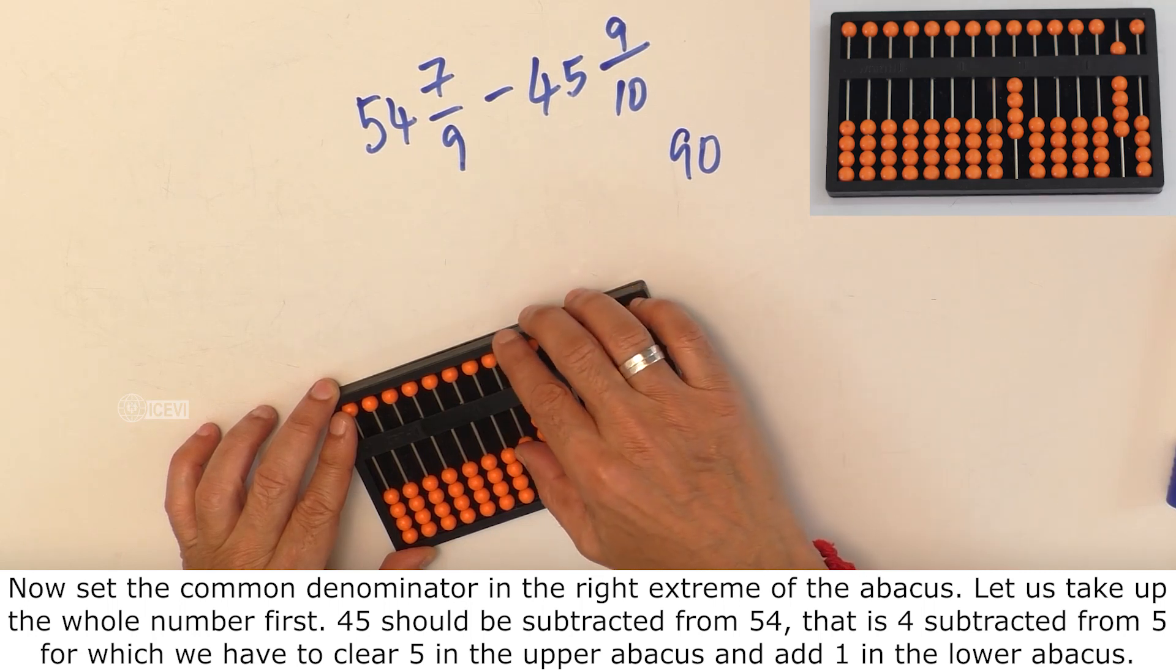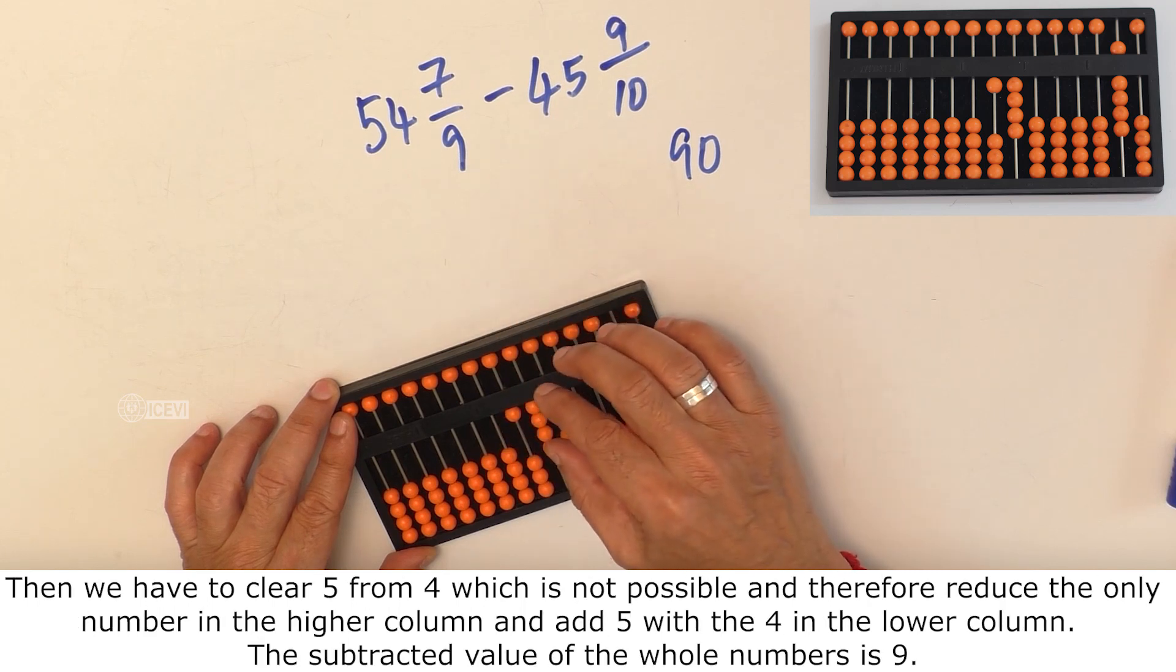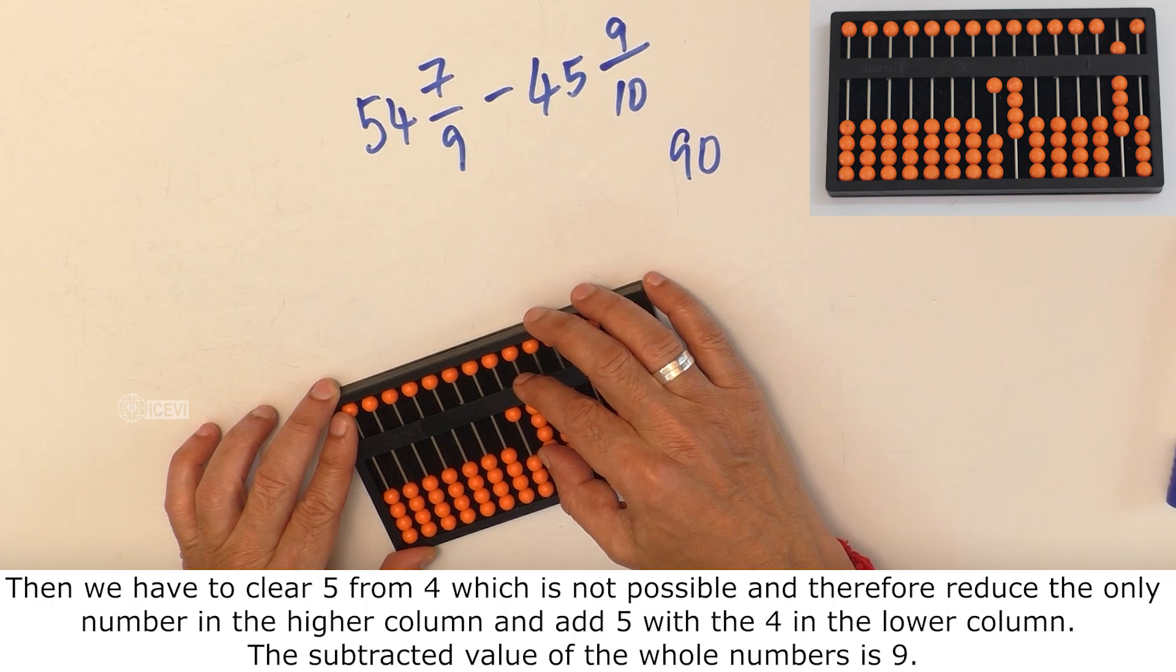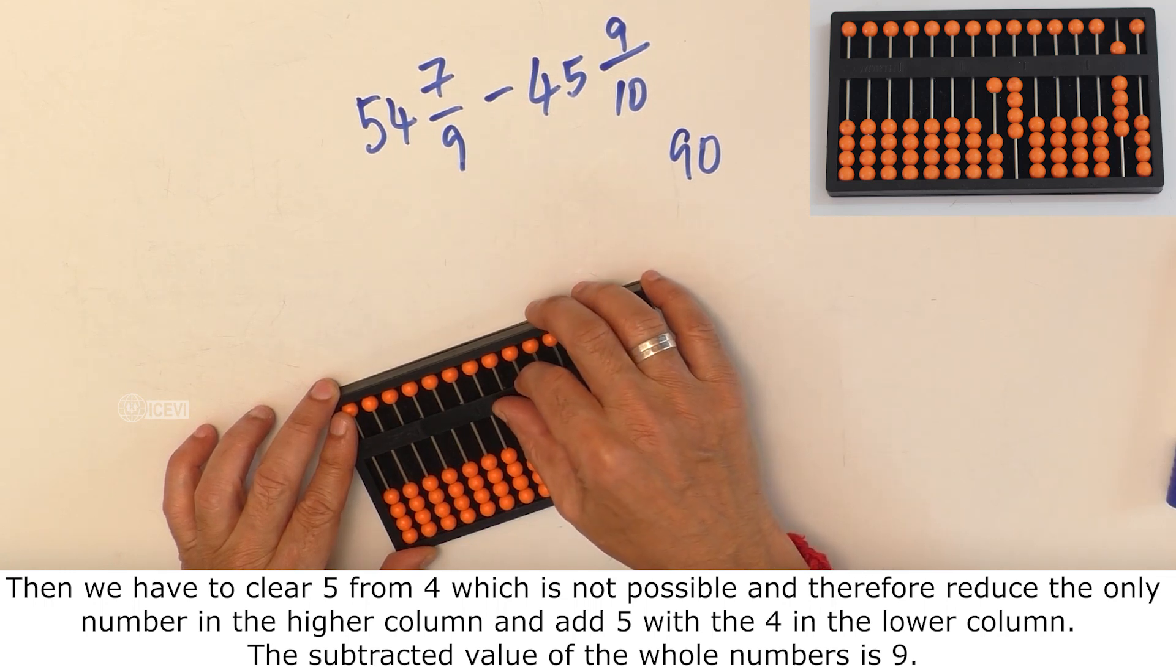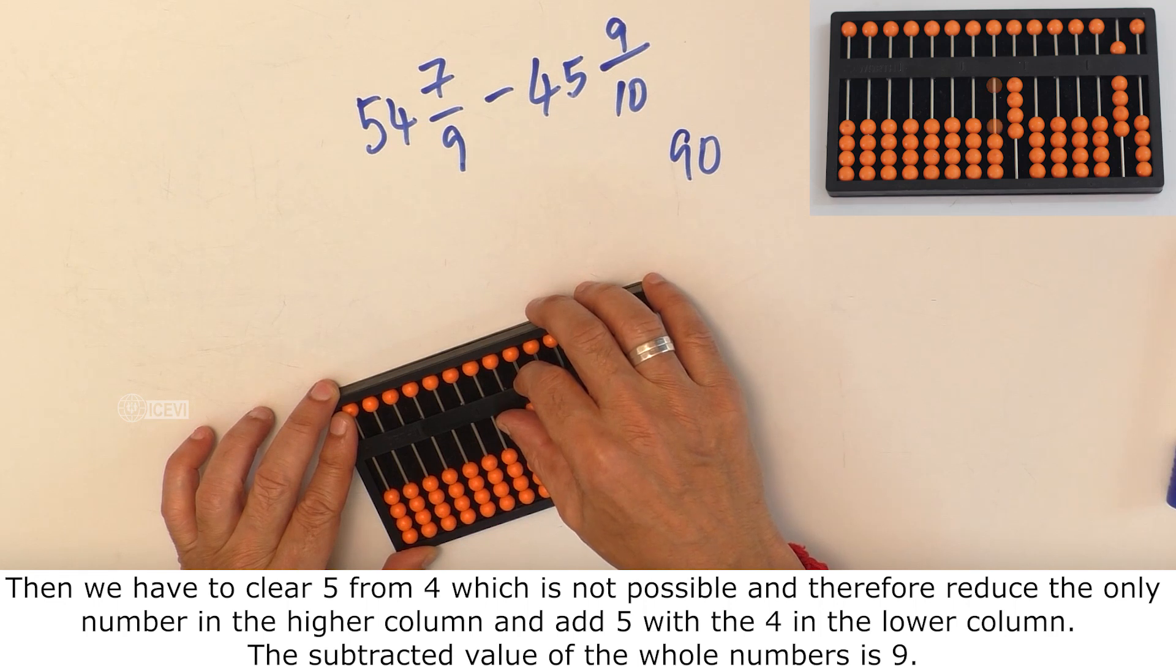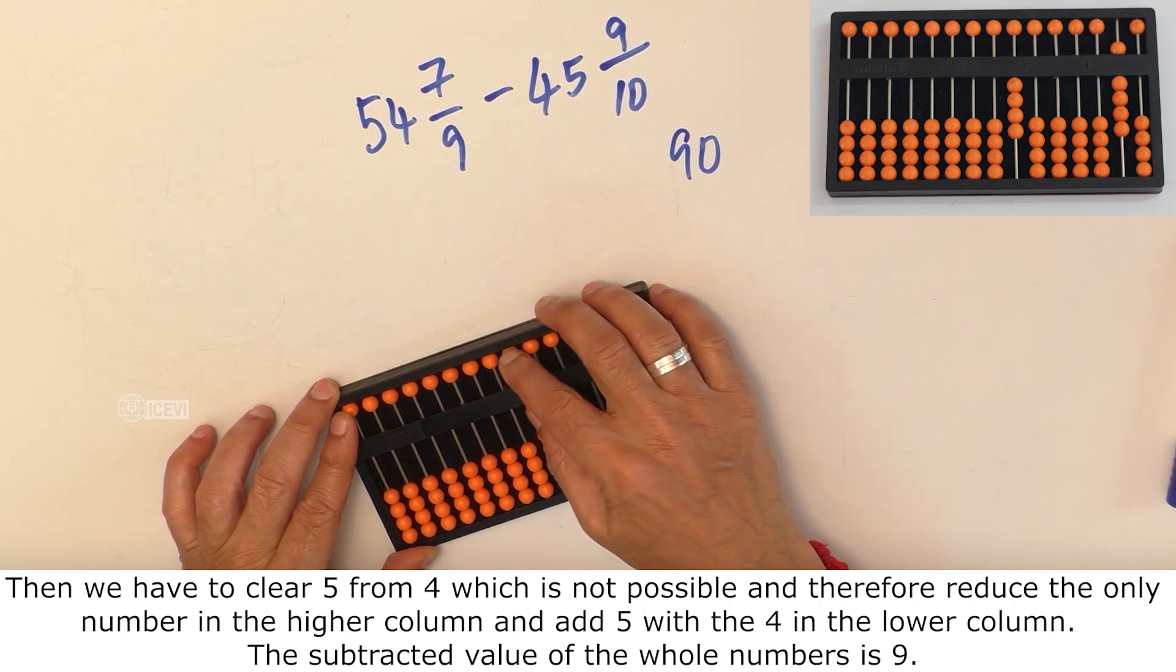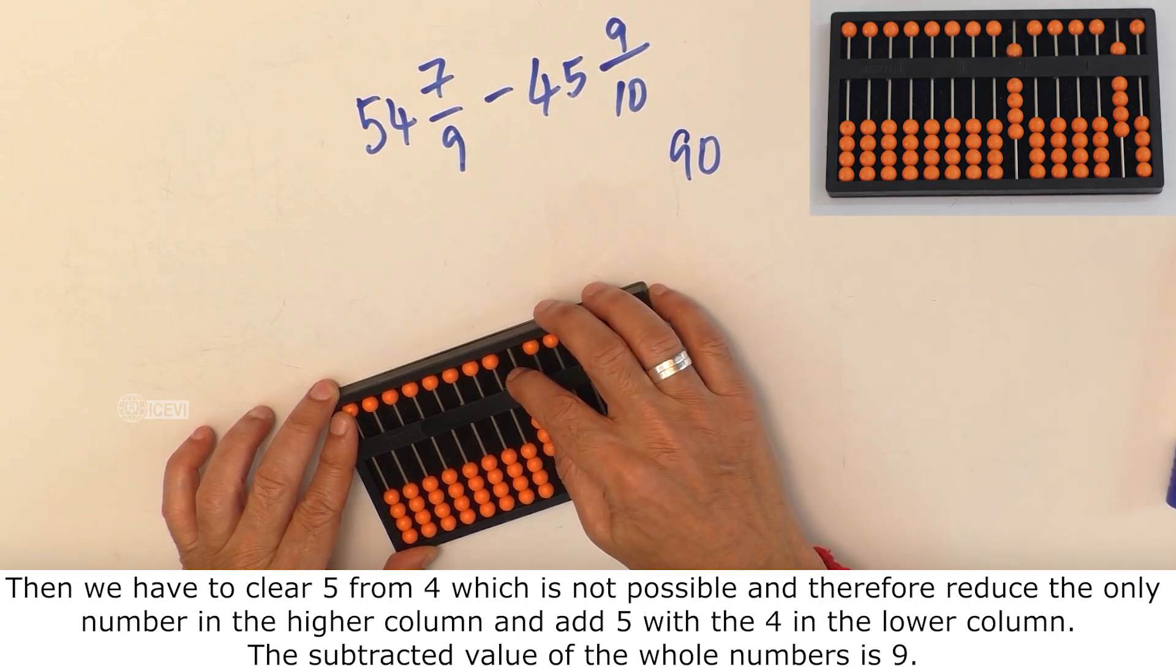Then we have to clear 5 from 4, which is not possible, and therefore reduce the only number in the higher column and add 5 with the 4 in the lower column. The subtracted value of the whole numbers is 9.